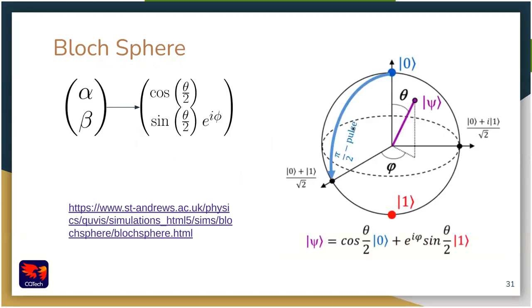There is yet another way to represent the state vector. Instead of using complex numbers alpha and beta, we can use spherical coordinate variables theta and phi. So instead of alpha, we write cosine of theta over two, and instead of beta, we write sine of theta over two times exponential i phi. This is enough to describe our two-level system — the qubit. The point of this notation is that it allows us to represent the state of a quantum system inside a sphere — the Bloch sphere.